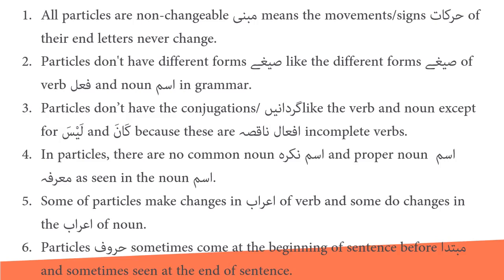Number 3: particles don't have conjugations — gardhan — like verb and noun, except for laysa and kana because these are incomplete verbs. Number 4: in particles there are no common noun (ism nakira) and proper noun (ism ma'rifa) as seen in nouns. Number 5: some particles make changes in i'rab of verb and some in the i'rab of noun. Number 6: particles sometimes come at the beginning of a sentence before mubtada, and sometimes at the end of the sentence.